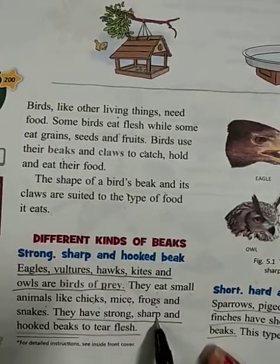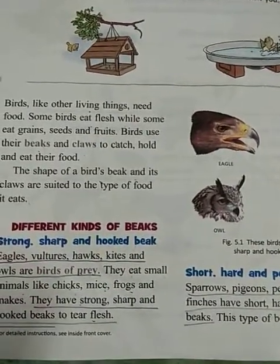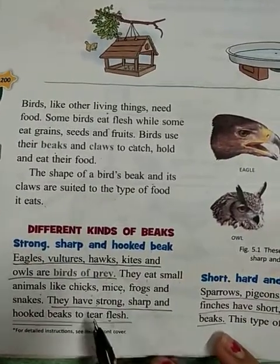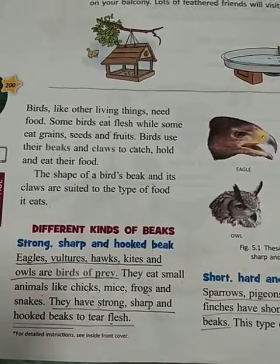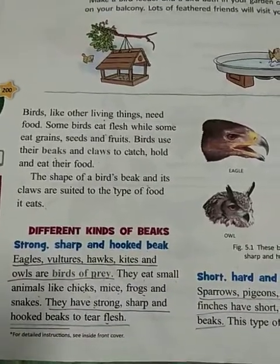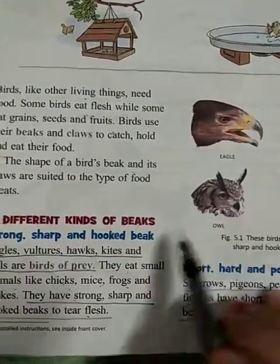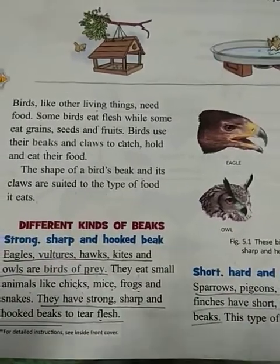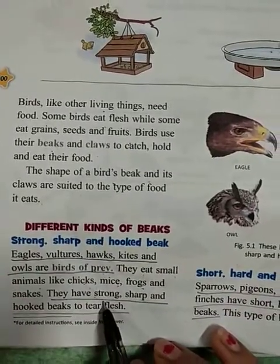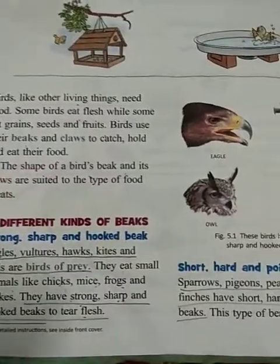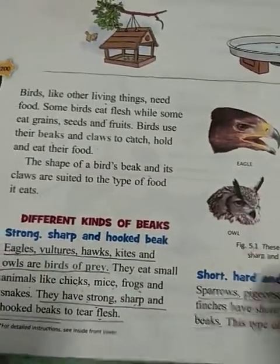These birds have strong, sharp, and hooked beaks to tear flesh. The beak is curved downward at the front so they can easily tear the flesh of other animals. If the beak were straight, they would not be able to tear flesh effectively. The hooked shape, combined with its sharpness and strength, allows them to tear and eat their food easily.